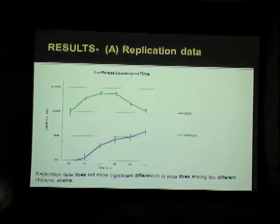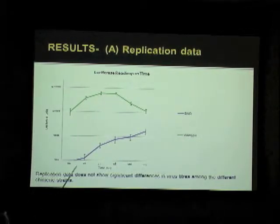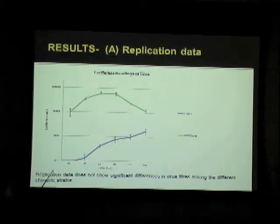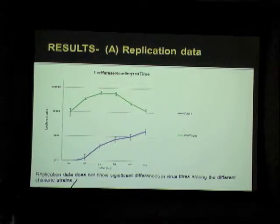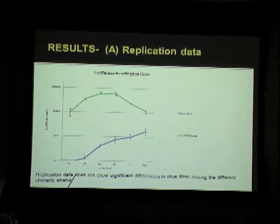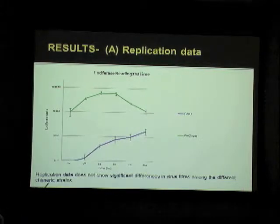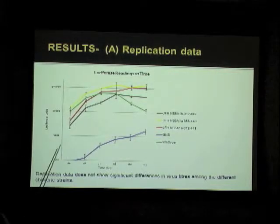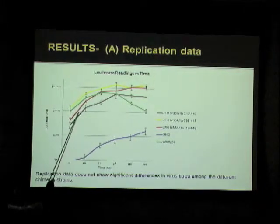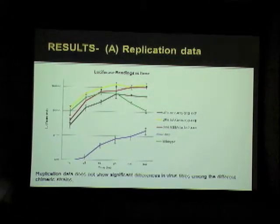Coming to the results — this is primarily the replication data with luciferase readings plotted against time. The controls include the GND mutation in NS5B, the RNA-dependent RNA polymerase of the virus; this mutation does not allow the virus to replicate. This is the wild-type profile. Looking at the replication data for the other three strains, we did not find a very significant difference among the different viral strains. Therefore, we concluded we would proceed to look at infection and check for viral release.